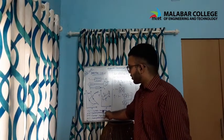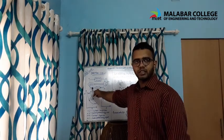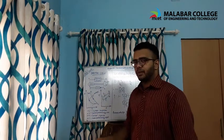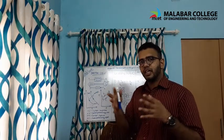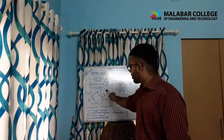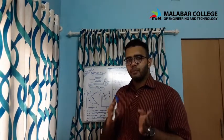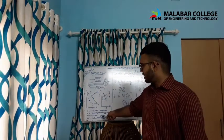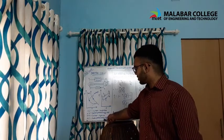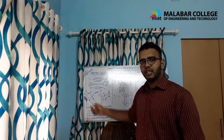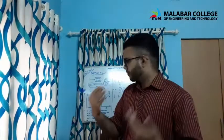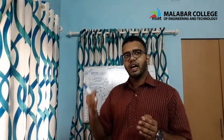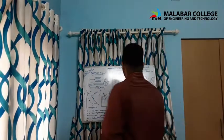Process 1 to 2 is isentropic compression — the compressor compresses the air. Process 2 to 3 is constant pressure heat addition — energy is added in the combustion chamber. Process 3 to 4 is isentropic expansion — energy is released to the turbine. Process 4 to 1 is constant pressure heat rejection — the cooler rejects the heat from the system.